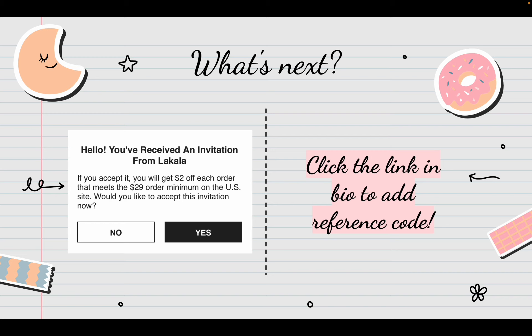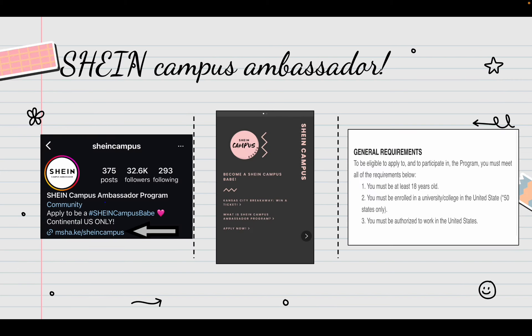That's one way you can save money on Shein by inputting a reference code. If that's something you're interested in, you can click the link in my bio to add my reference code. I also want to add that by inputting the reference code, I do make three percent commission from that. So if you want to have your own reference code or be able to make money, I'm going to show you how.